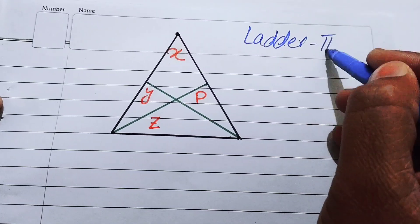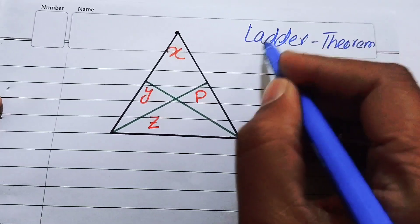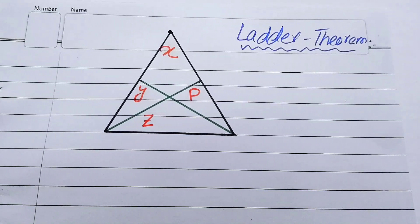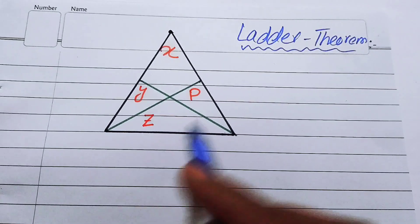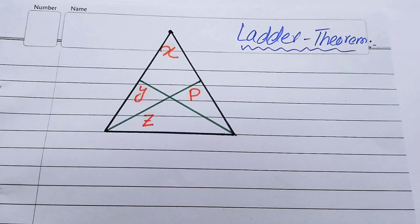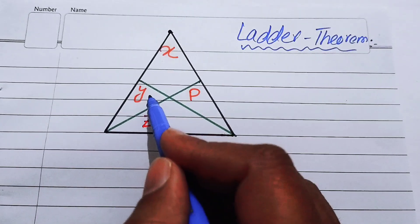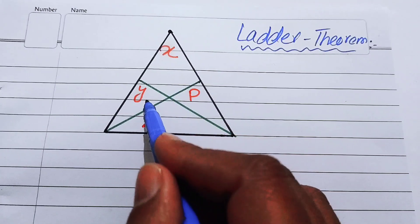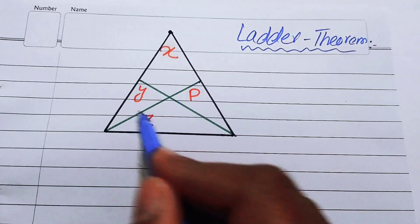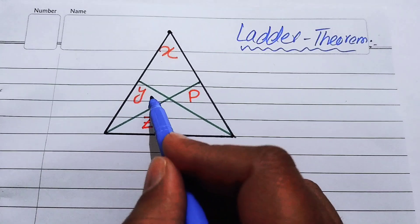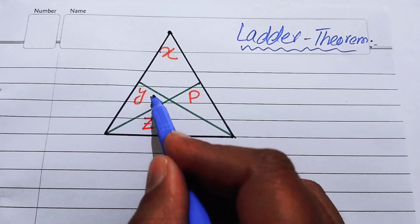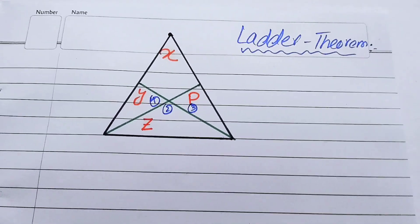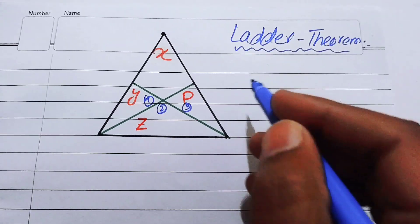I hope you already know about the Ladder Theorem, but if not, you will understand the concept here. In the Ladder Theorem, if we have a triangle inscribed with three smaller triangles — this is the first triangle, this is the second triangle, and this is the third triangle — then the Ladder Theorem gives us a formula.